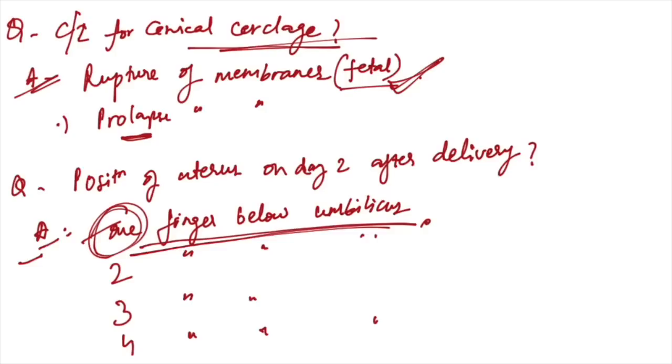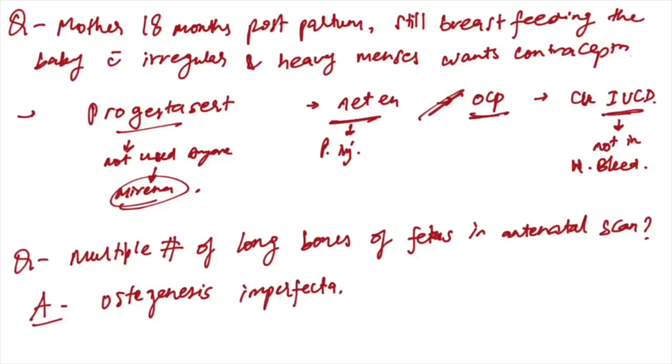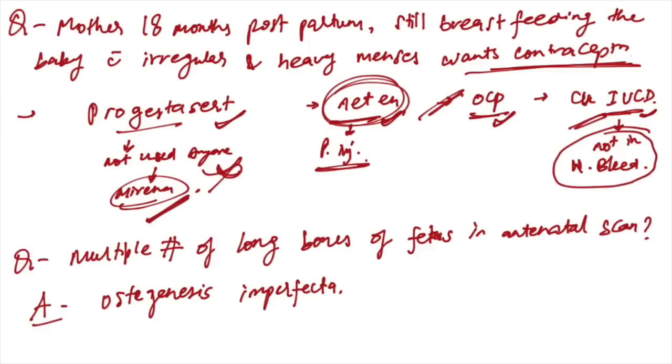Mother 18 months postpartum, still breastfeeding with irregular and heavy menses, wants contraception. Options were progestasert, NET-EN, OCPs, and IUCDs. Progestasert is not used now, Mirena is used instead. NET-EN is a progesterone injection. Copper IUCD is contraindicated in heavy bleeding. So we will give OC pills at 18 months postpartum as the best choice for contraception.